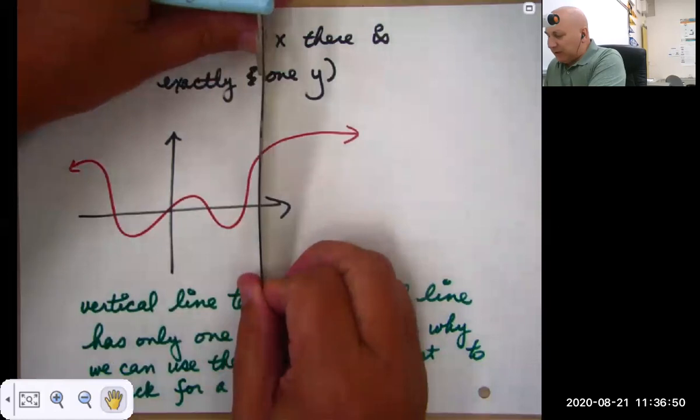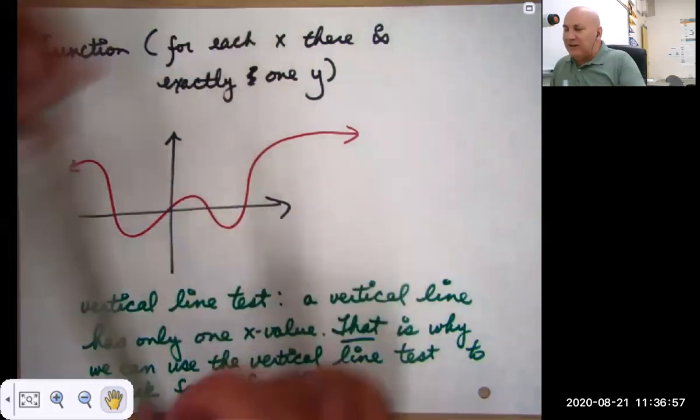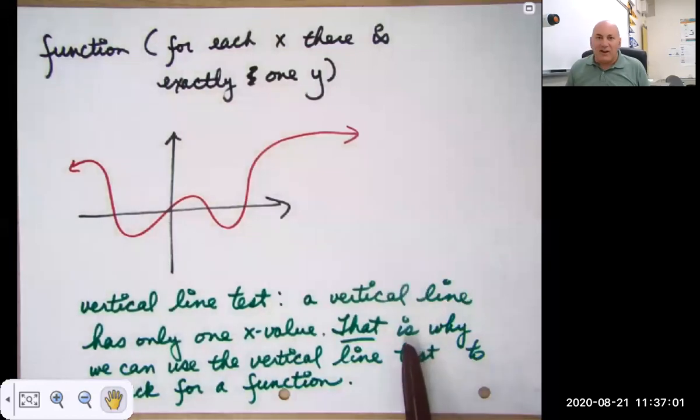And if it's only crossing the graph at one point, for every x value, then it is a function. So that's our vertical line test.